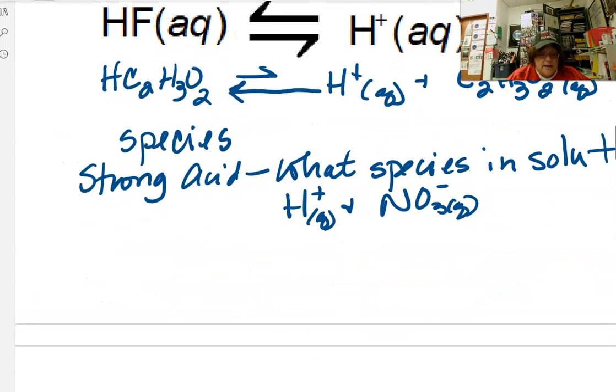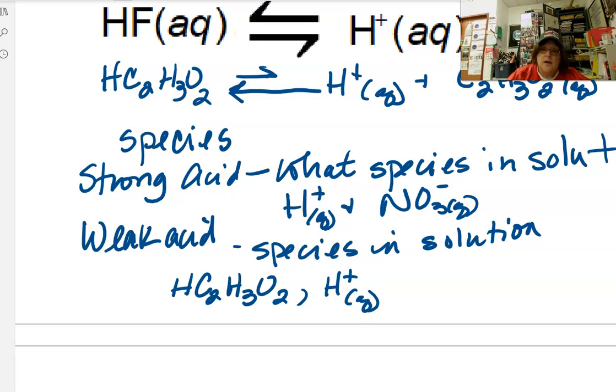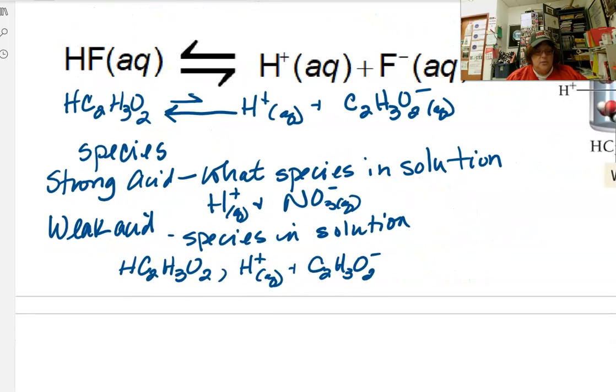For a weak acid, what species you're going to see, vinegar, the acetic acid molecule. And then you'll see a few, but not a lot, of hydrogen ions and a few, but not a lot, of acetate ions. So the difference between a strong acid and a weak acid, right there.